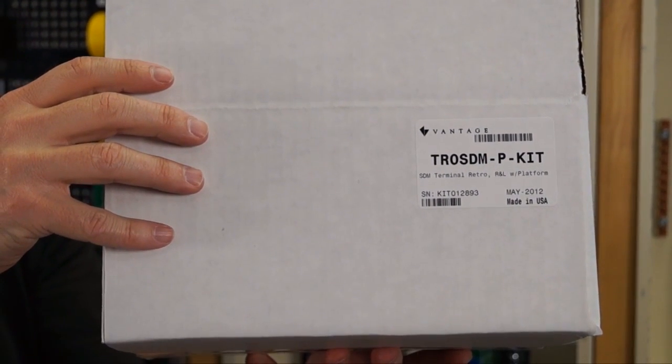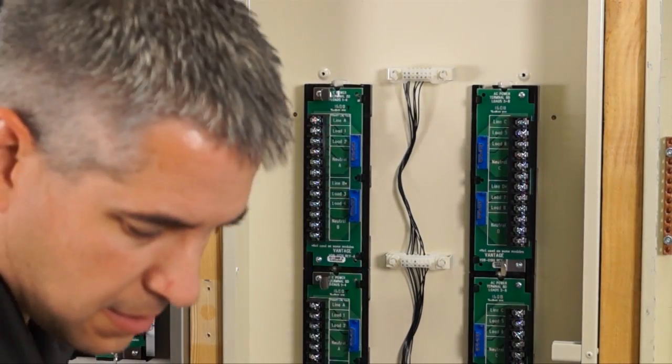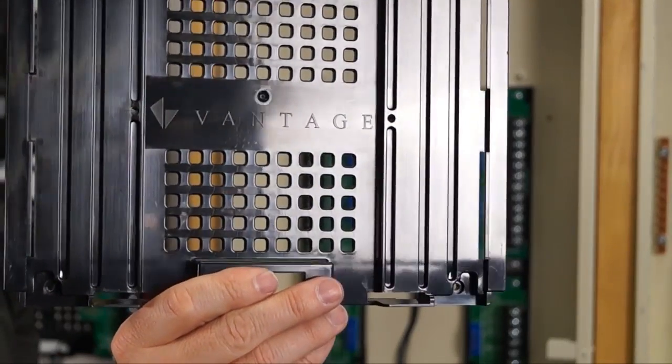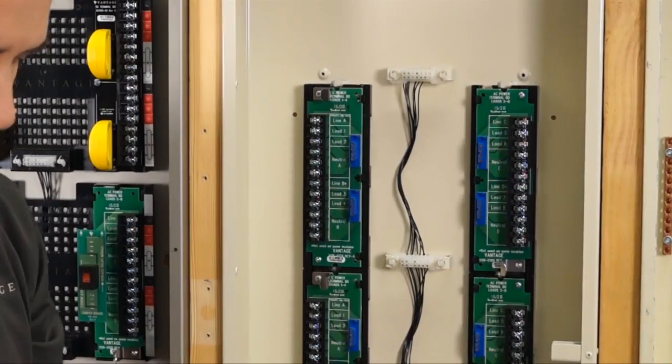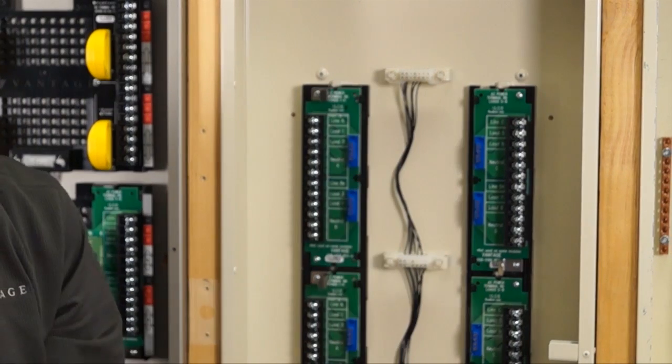It's the TRO SDM-P-Kit. That kit consists of the backplane plastic, like it was in the new enclosure, and some extra screws to mount it.